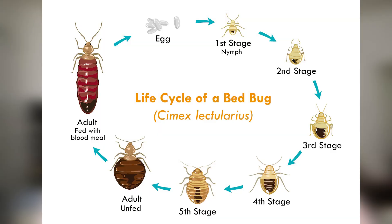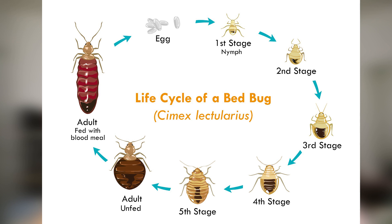Bed bugs also look different depending on where they are in their life cycle — from egg, to nymph, to adult. Young bed bugs, called nymphs, have a similar shape to adults but are smaller and lighter in color. As nymphs grow and molt, they become darker and larger until they reach adulthood.